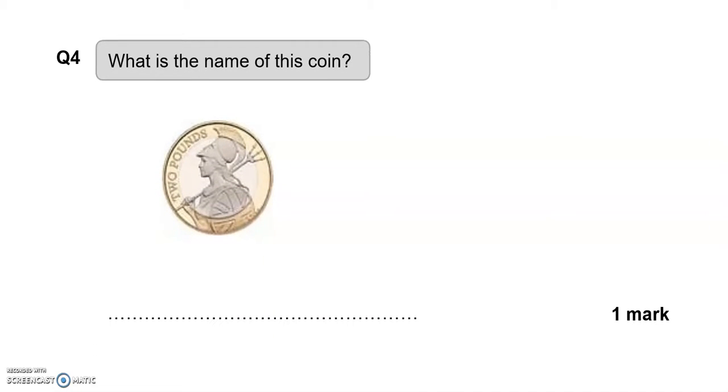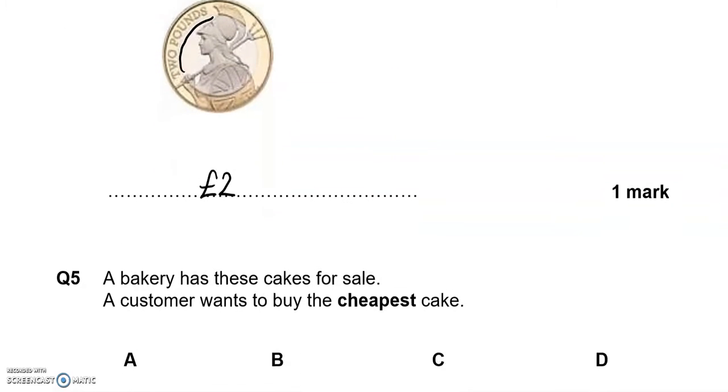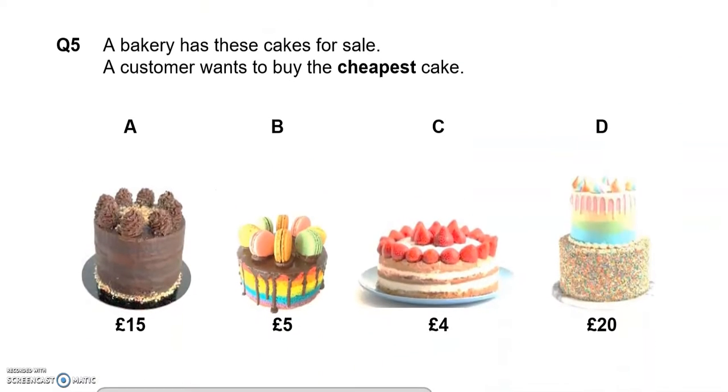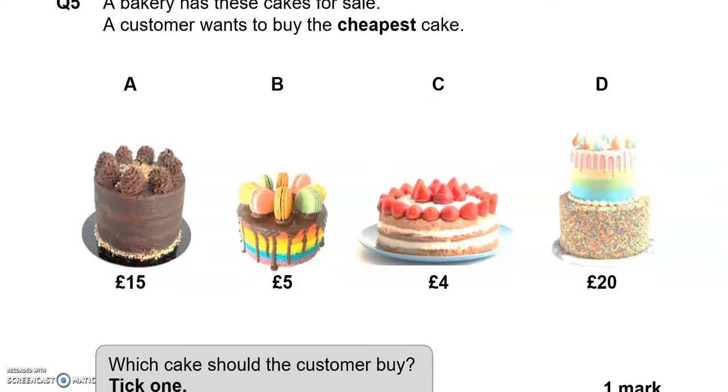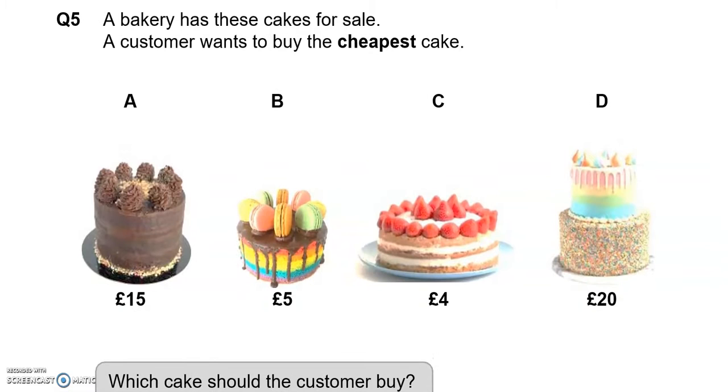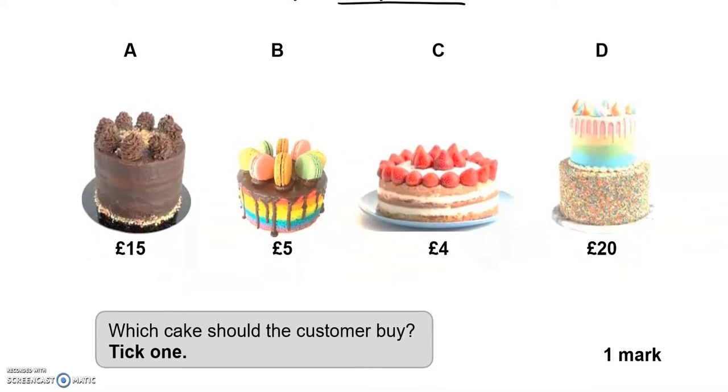What is the name of this coin? You can see two pounds, so this is a two pound coin. A bakery has these cakes for sale. A customer wants to buy the cheapest cake. Which cake should the customer buy?